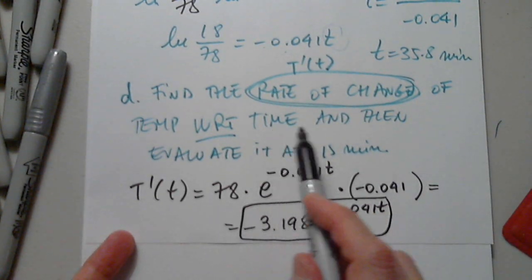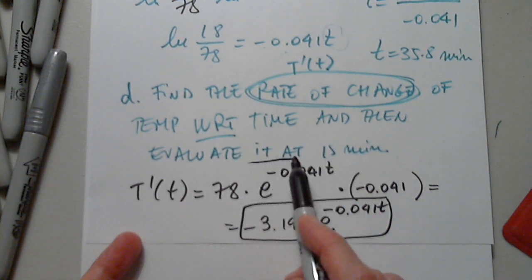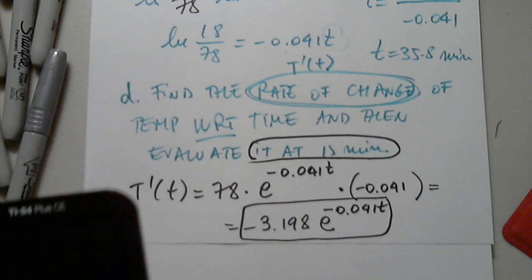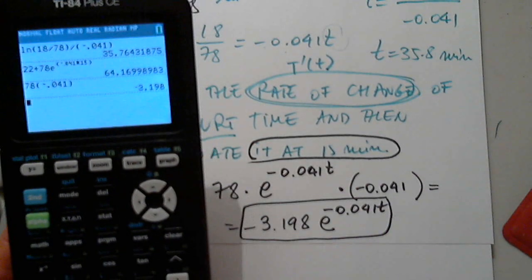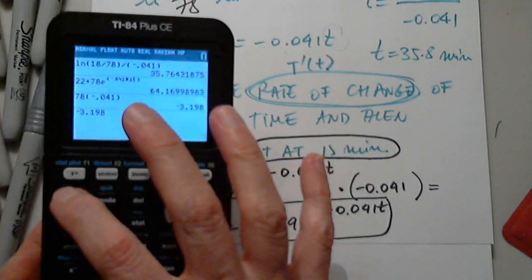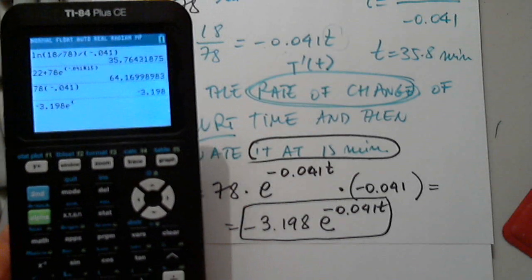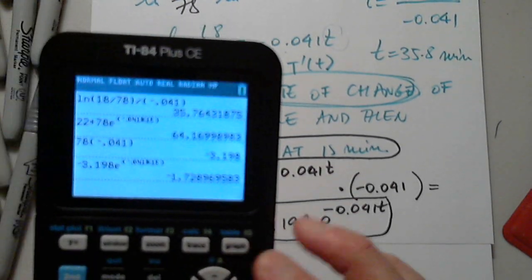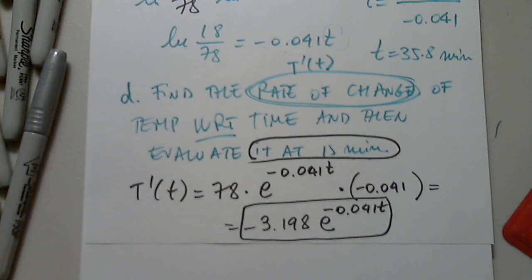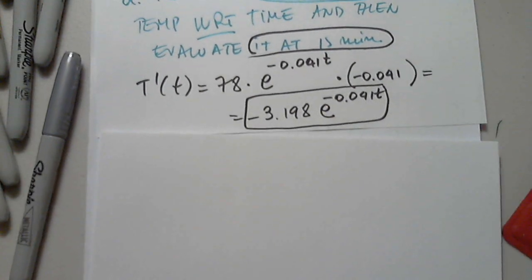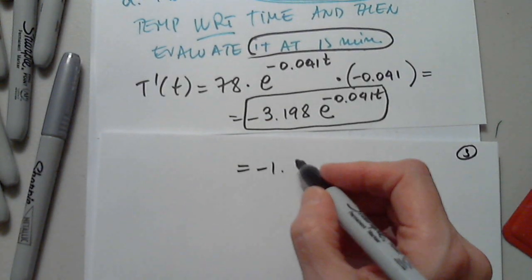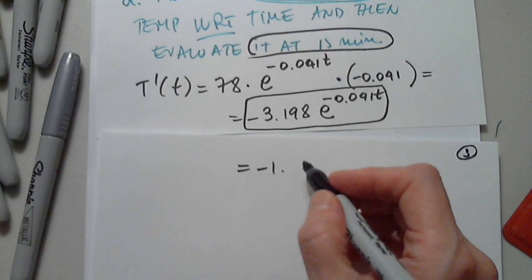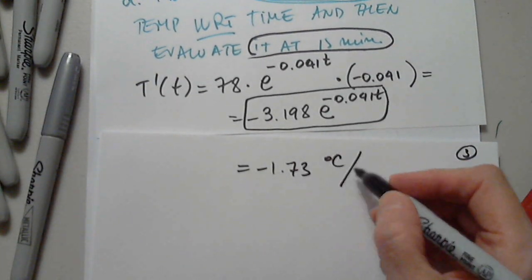Now evaluate at t equals 15: plug in 15 for T. So negative 3.198 times e to the power of negative 0.041 multiplied by 15. I got negative 1.73 degrees Celsius per minute.